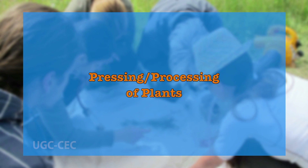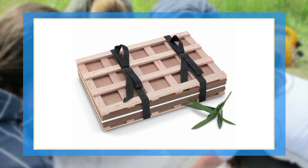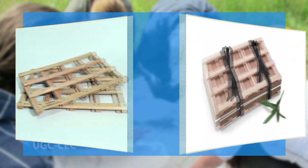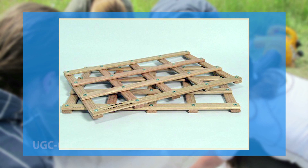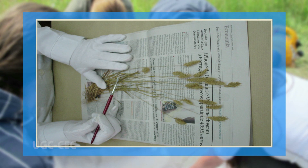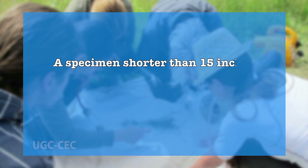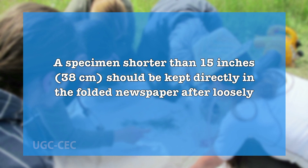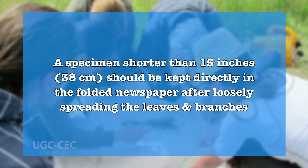Pressing or processing of plants — once a plant specimen has been collected and field data is recorded, the specimen needs to be pressed and dried using a plant press. A plant press consists of two panels of wood or iron (12 x 18 inches) with two press straps or chains used to tighten the press. The plant specimen is placed in a folded piece of newspaper. The plant should be arranged so that upper and lower leaf surfaces, flowers, and fruits are visible. A specimen shorter than 15 inches should be kept directly in the folded newspaper after loosely spreading the leaves and branches.